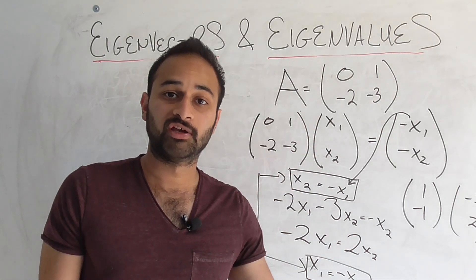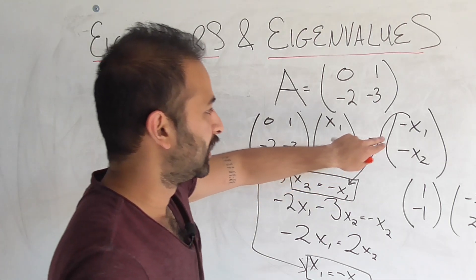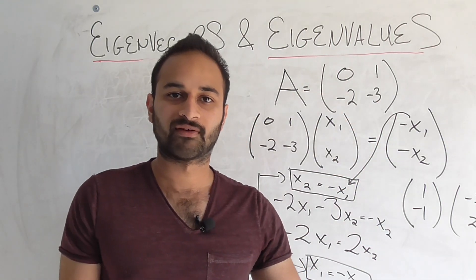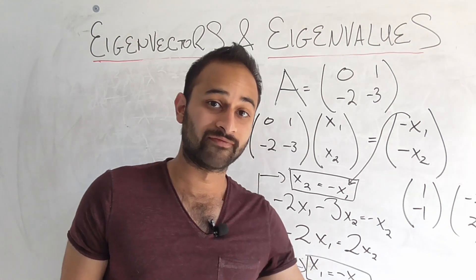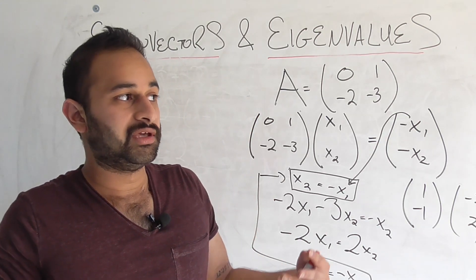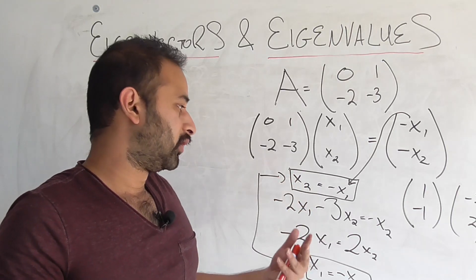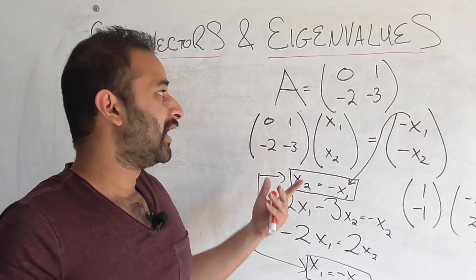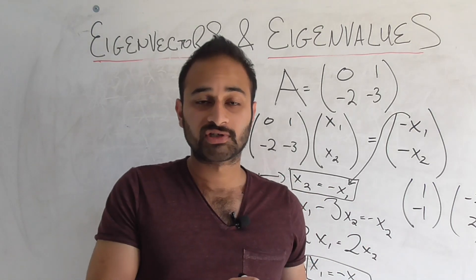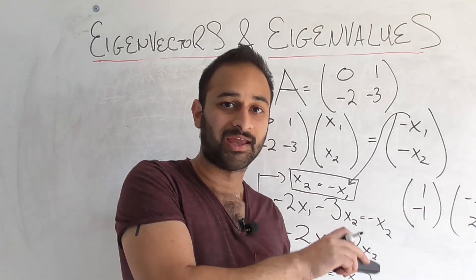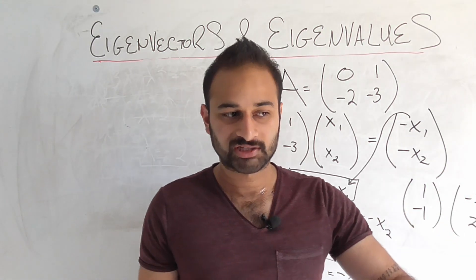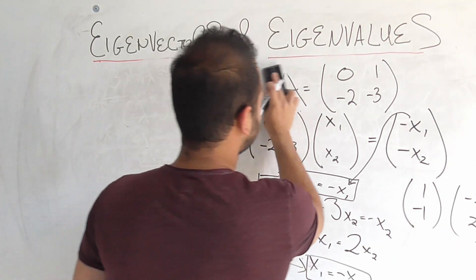And we can do the same thing for the other eigenvalue, which was negative 2. Instead, we would put a negative 2 right here and then we would solve the system of equations and we would get the family of eigenvectors that solve that. Okay, so that's kind of how we do it. We set the characteristic polynomial equal to 0 for the A minus lambda I determinant. We find the eigenvalues and for each eigenvalue we plug it back in and we figure out what is the family of eigenvectors that is corresponding to that one.